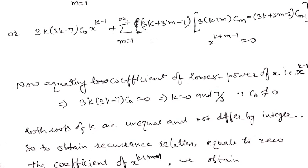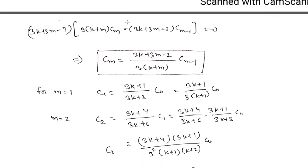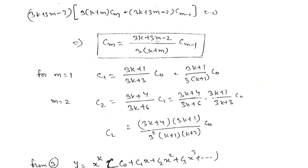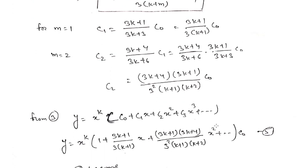Putting m equals 1, we get c1 equals (3k plus 1) over (3k plus 1) times c0. Putting m equals 2, we get c2 equals (3k plus 4) over (3k plus 6) times c1. Substituting the value of c1, c2 becomes (3k plus 1)(3k plus 4) over [3 squared (k plus 1)(k plus 2)] times c0. Similarly we can obtain c3, c4, and so on.